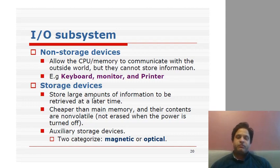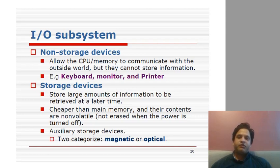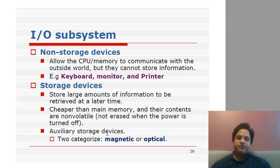Storage devices are used to store large amounts of information for later retrieval. They are non-volatile — unlike RAM, data persists without power. Storage devices are slower but cheaper than RAM and can hold much more data. There are two kinds: magnetic devices and optical devices. Magnetic devices include magnetic discs and magnetic tapes.